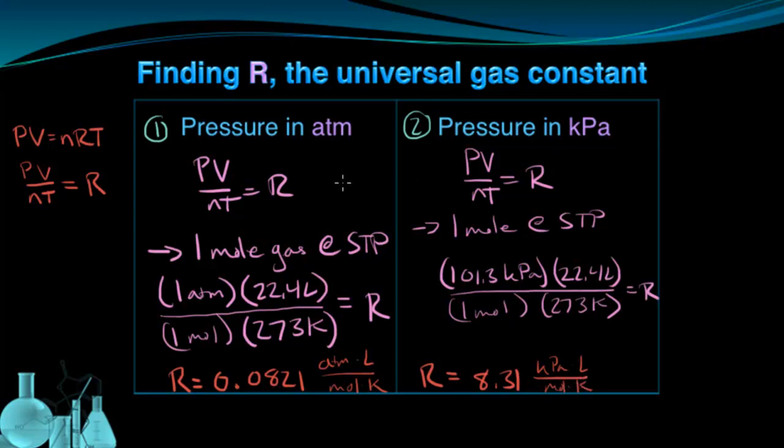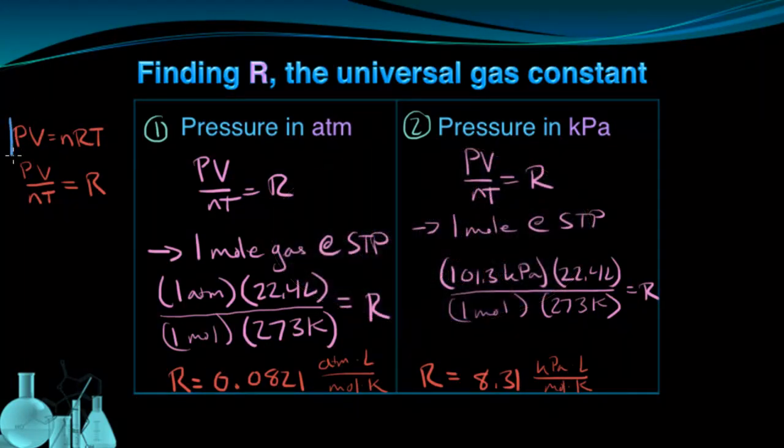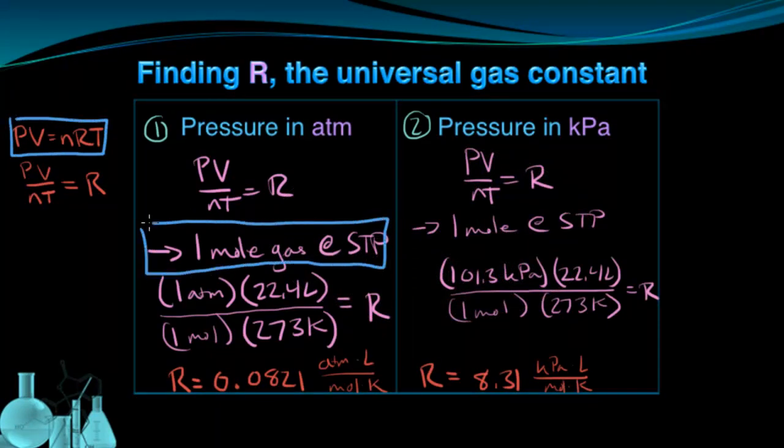The ideal gas law is incredibly powerful when it comes to solving problems. But you have to make sure that you use the appropriate R value depending on how your pressure is being measured. Remember, you can always calculate the R value by using PV equals nRT and the conditions of one mole of a gas at STP.